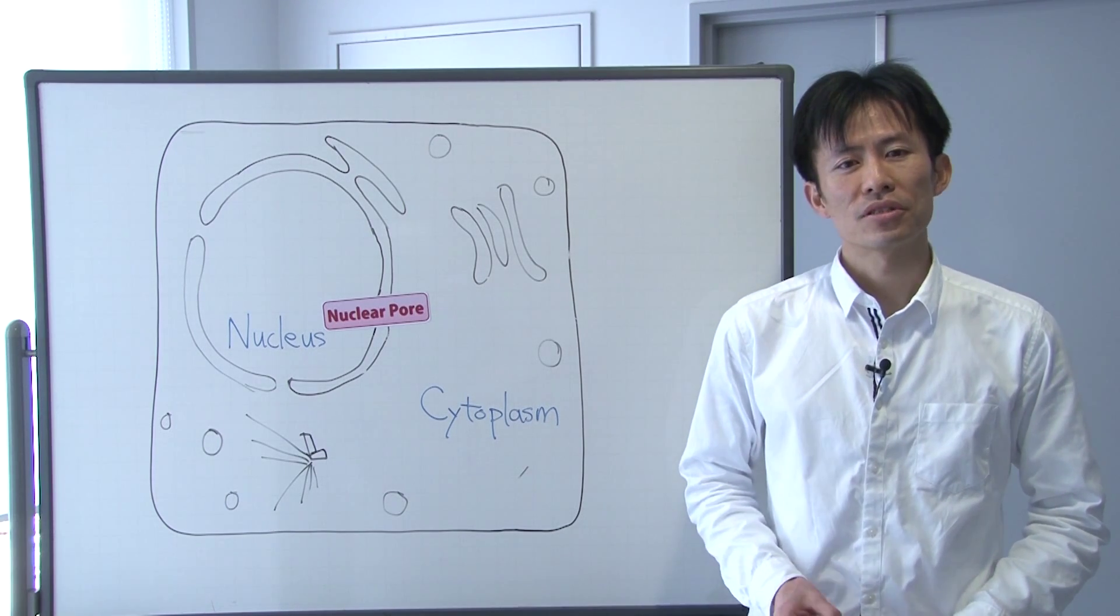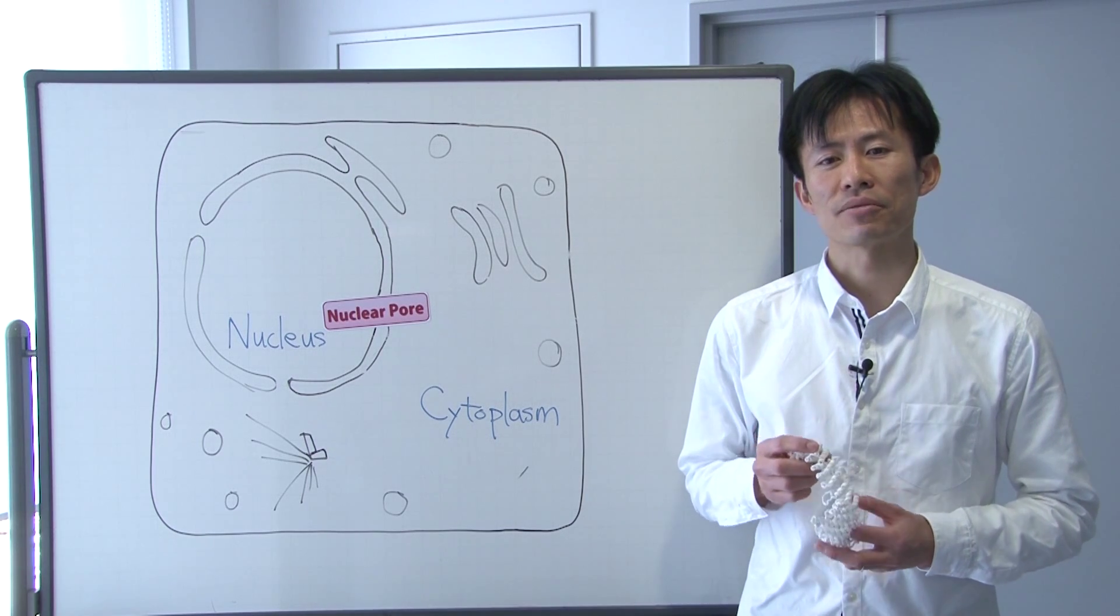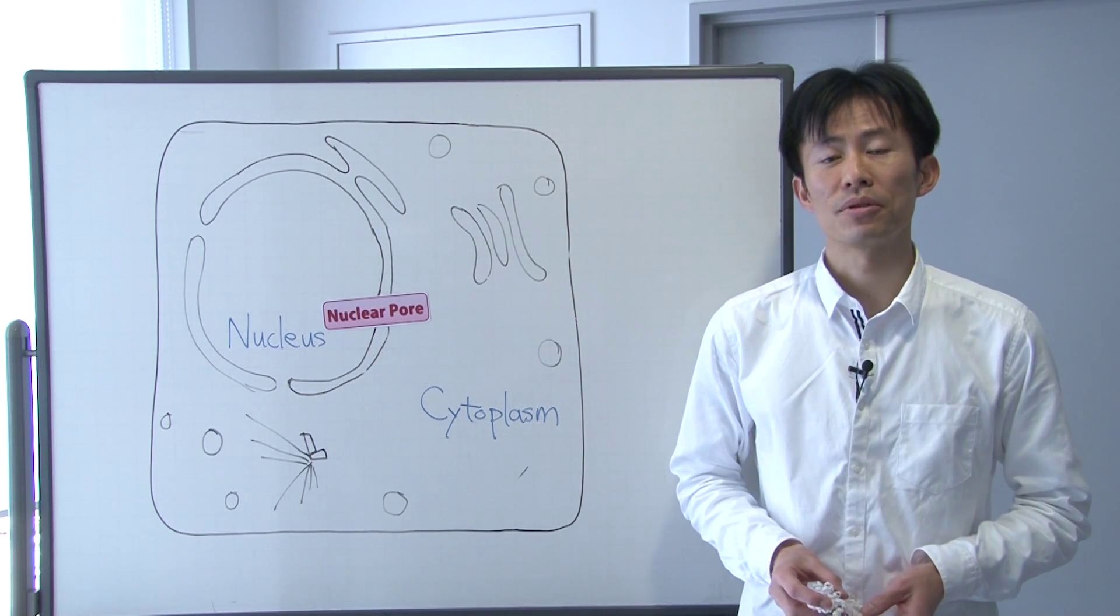Some proteins, such as importin beta, are highly flexible, and it plays a critical role in passing through molecular crowding.